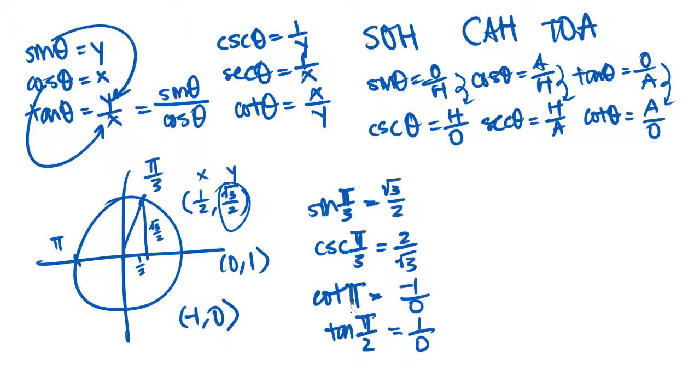These just don't make sense. So whenever they ask you for it, just write undefined, because that's what it is. It doesn't exist. There's no such thing. As we see when we graph it, there's going to be asymptotes there, but we'll talk about that later.